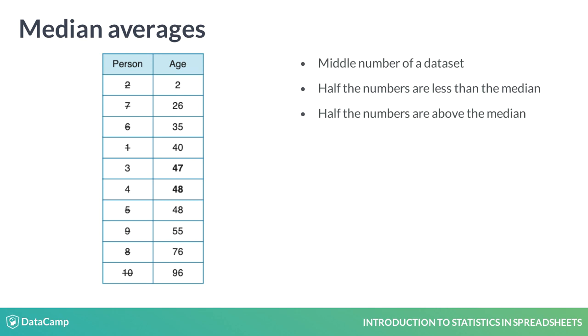The median lies in between 47 and 48, which is 47.5. If our sample had an odd number of observations, such as 9, the middle number would have just been 47.